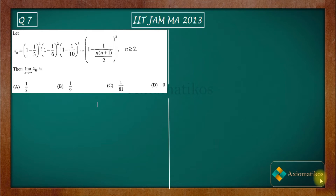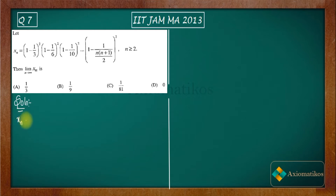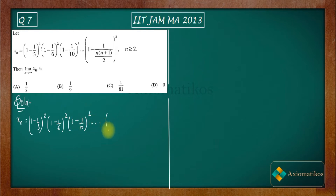Now let us have a look. Let xn be a sequence whose every term is written in the form of a product of n terms. The question is asking about the limit of this sequence xn. The nth term xn is written like this: (1 - 1/3²)(1 - 1/6²)(1 - 1/10²) and up to (1 - 1/[n(n+1)/2]²).